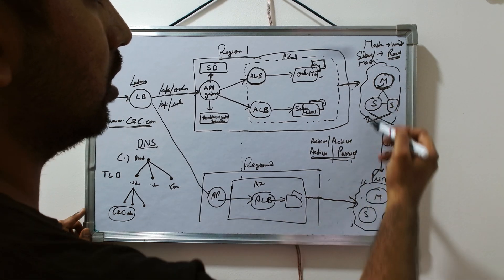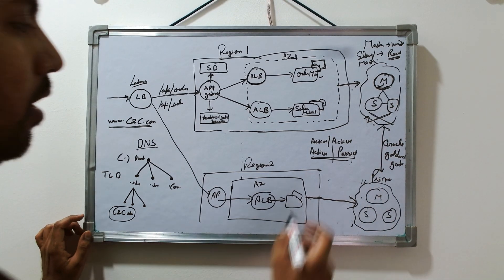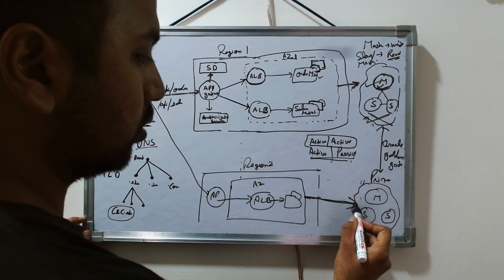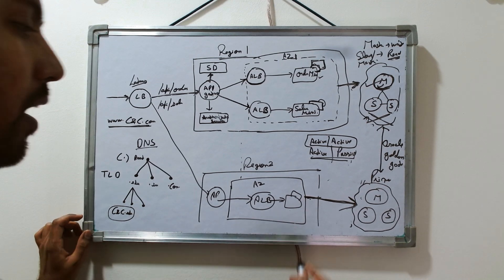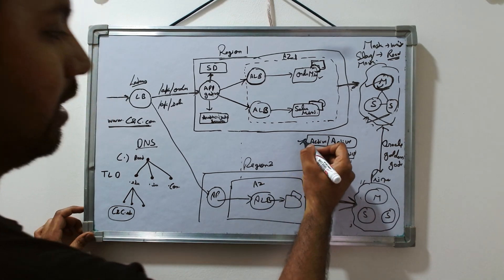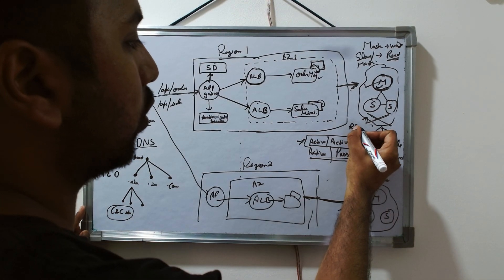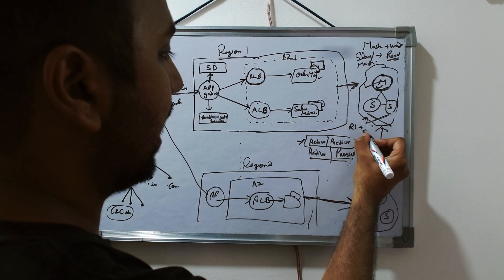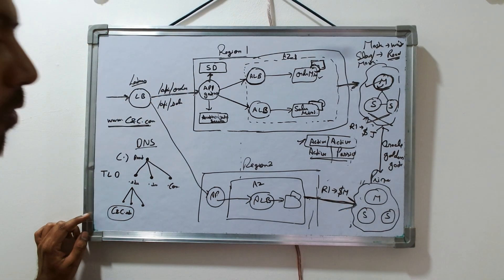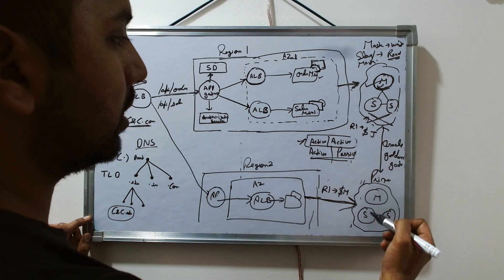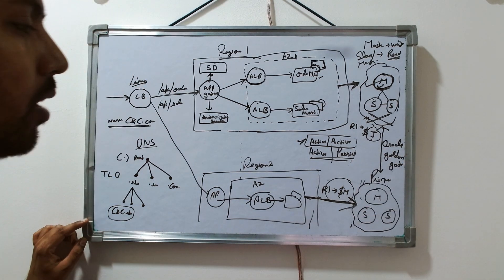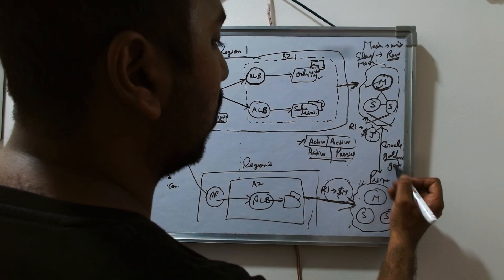In active-active mode, both regions are actively receiving traffic — read and write — and each region uses its own master-slave DB. Data is synchronized between regions via Oracle Golden Gate. However, active-active is more complicated: if Region 1 updates row 1 from 'S' to 'J' and Region 2 updates the same row from 'S' to 'M', a conflict arises during replication. Conflict resolution must be handled, and Oracle Golden Gate has the capability to resolve such conflicts.